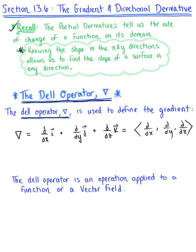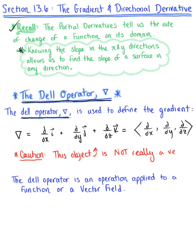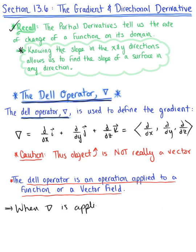Caution, young Padawans: this del operator is not really a vector. The nabla symbol, or del operator, is not really a vector. It is important to note that the del operator is in fact an operation that's applied to either a function or a vector field. When the del operator is applied to a scalar valued function, we attain the gradient.